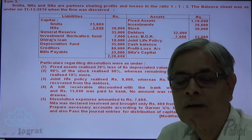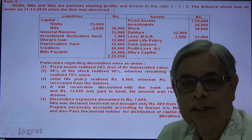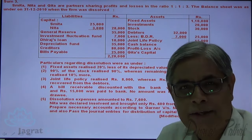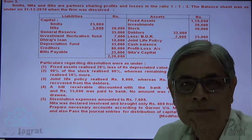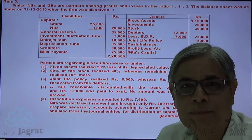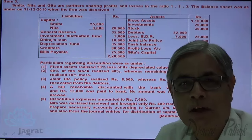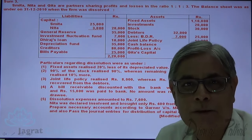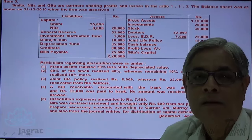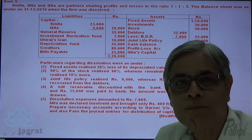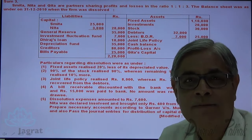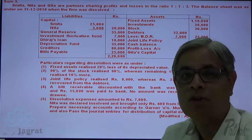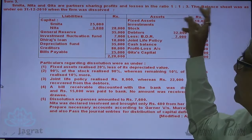This is a sum which we are required to solve as per the decision of Garner versus Moore. Application of this decision requires one of the partners to be insolvent and that insolvent partner is unable to pay the dues towards the firm, i.e., the debit balance of such partner is not recoverable. That not-recoverable amount is known as capital deficiency. As per Garner versus Moore, this capital deficiency is not a business loss, so such loss cannot be distributed among solvent partners in the profit sharing ratio.